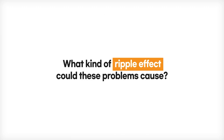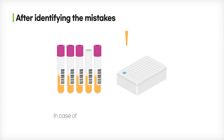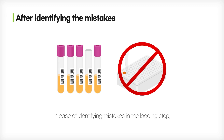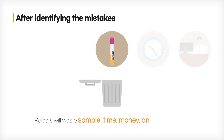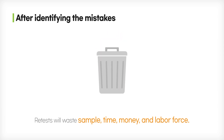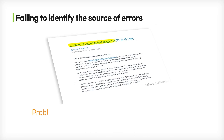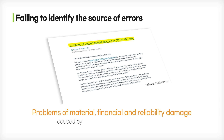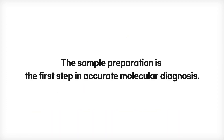What kind of ripple effect would these problems have? In the case of identifying the error situation, the samples, time, money, and manpower could be wasted for retesting. In the case of failure to identify the error situation, there will be problems of material, financial, and reliability damage caused by false positives and false negatives.